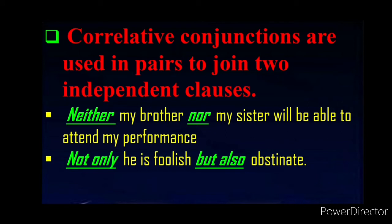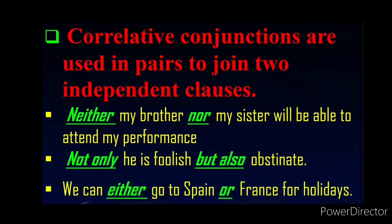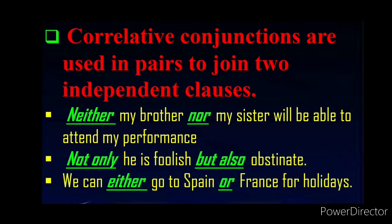Another example: Not only is he foolish but also obstinate. 'Not only...but also' is used to join sentences in which both options presented can be chosen or both conditions are fulfilled. We can either go to Spain or France for holidays. 'Either...or' is used to join sentences which present two choices of which only one can be taken up.